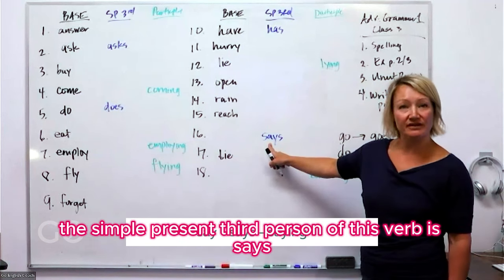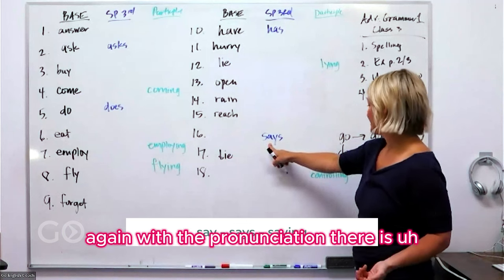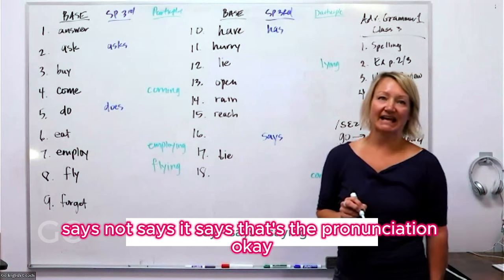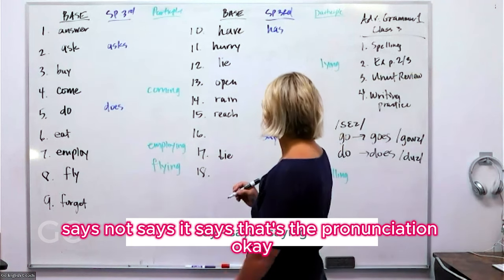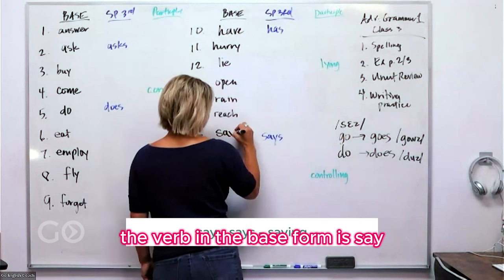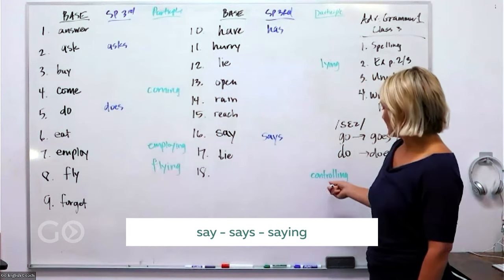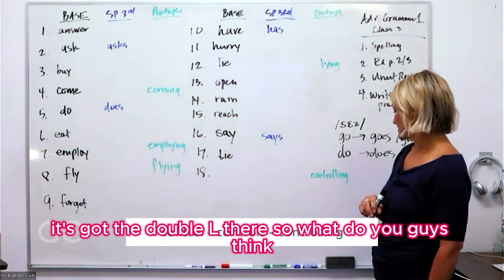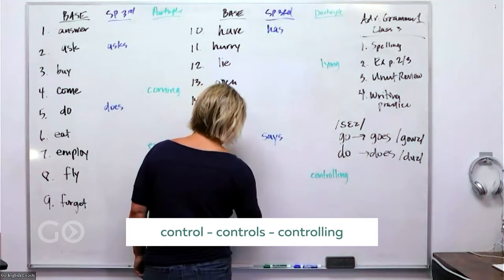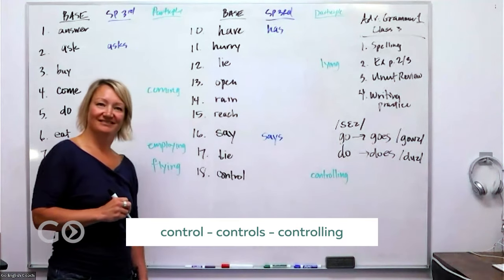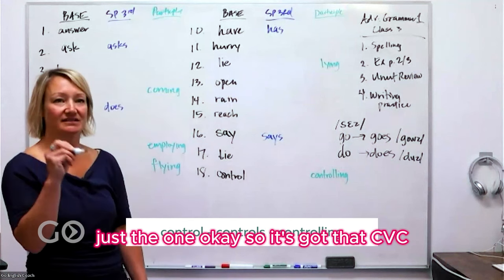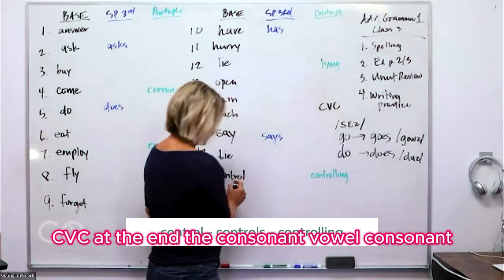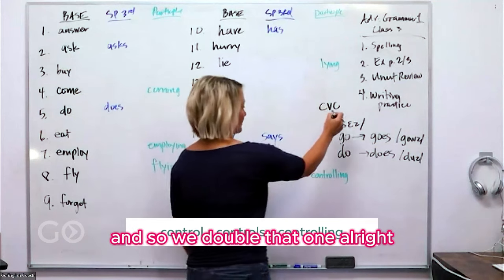The simple present third person of this verb is 'says' — the pronunciation is 'says,' not 'says' with a long A; it says 'sez.' The verb in base form is 'say.' And then the final one: the participle is 'controlling,' with a double L. What do you think — does 'control' have two L's at the end or just one? Just one. So it has that CVC — consonant-vowel-consonant — at the end, and we double that final consonant.